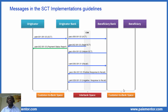Let's begin with the overview of all the messages that we find in the SCT implementation guidelines documents. The PAIN.002 1.3 is highlighted in green color. It is sent by the debtor bank to the debtor. In a previous video about the customer-to-bank space and the interbank space, I told you that messages sent from the bank to the customer are considered as reporting messages. So the PAIN.002 is a reporting message.